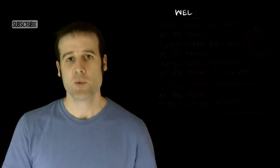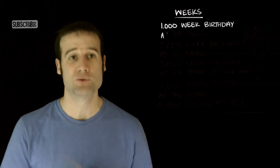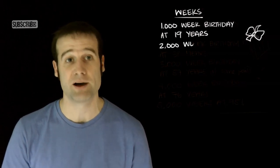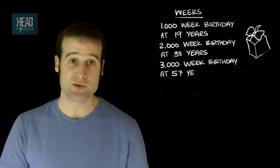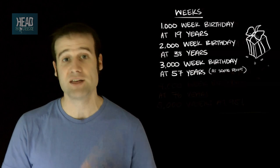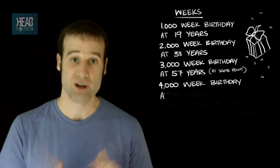Moving down to weeks. When you're 19, you will pass 1,000 weeks old. When you're 38, you'll go straight past 2,000 weeks. At some point when you're 57, you go past 3,000 weeks. 4,000 weeks is when you're 76. And 5,000 weeks is some point when you're 95.